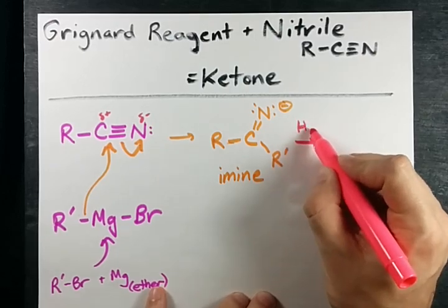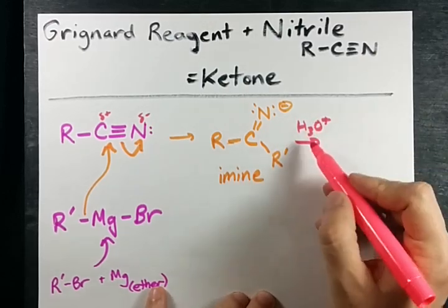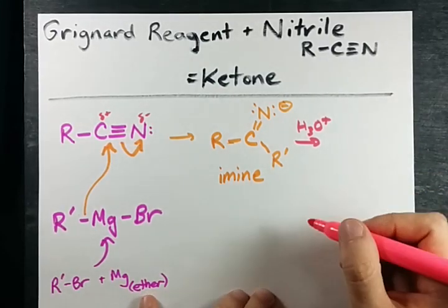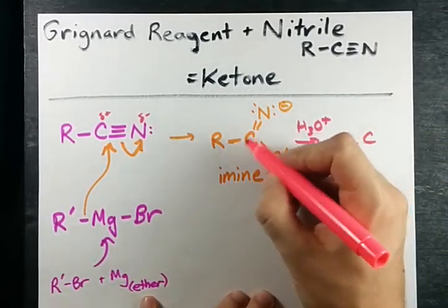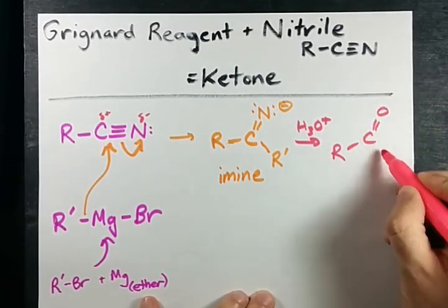and all you have to do is mix it with acidified water or aqueous acid, I guess I should call it, and it ends up becoming the ketone. Double bonded N is replaced with a double bonded O.